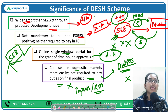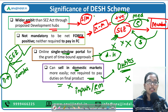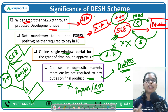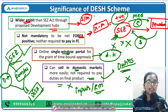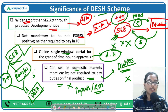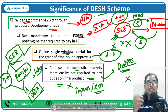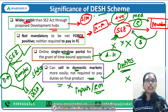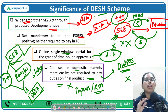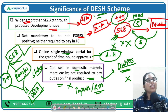Earlier under the SEZ Act, there was categorization — Delhi zones, Mumbai zones, coastal area zones, etc. Under the DESH Scheme, all of these will be integrated into one framework and called the development hub. States like Gujarat, Maharashtra, and Himachal Pradesh will have their respective state governments bring their SEZs together and integrate them under the development hub framework.